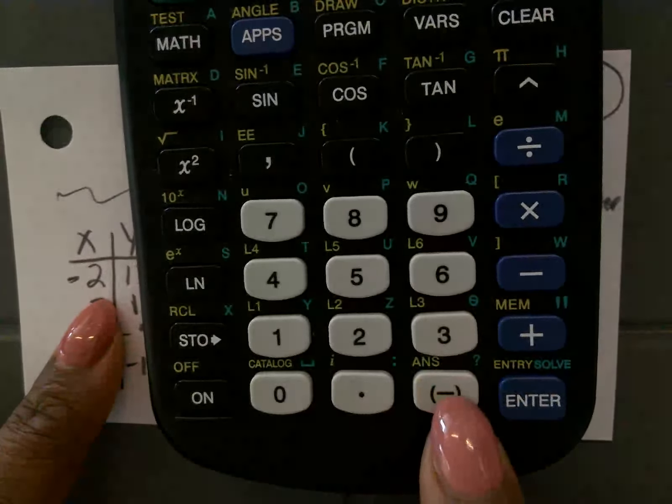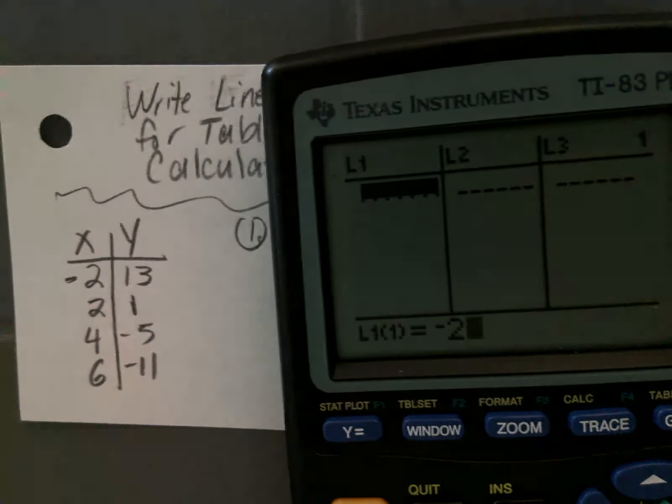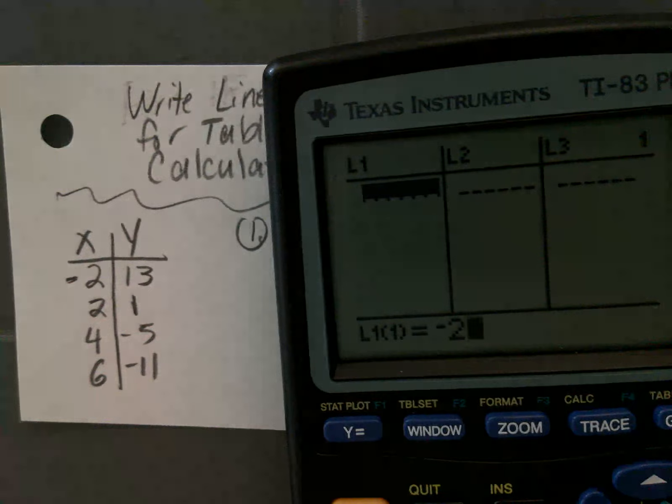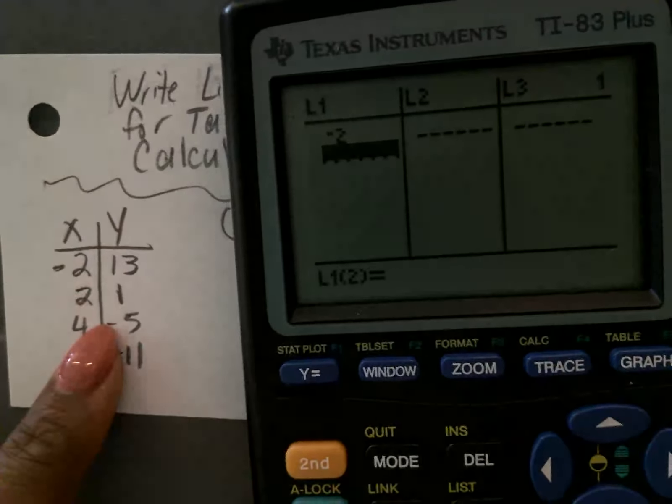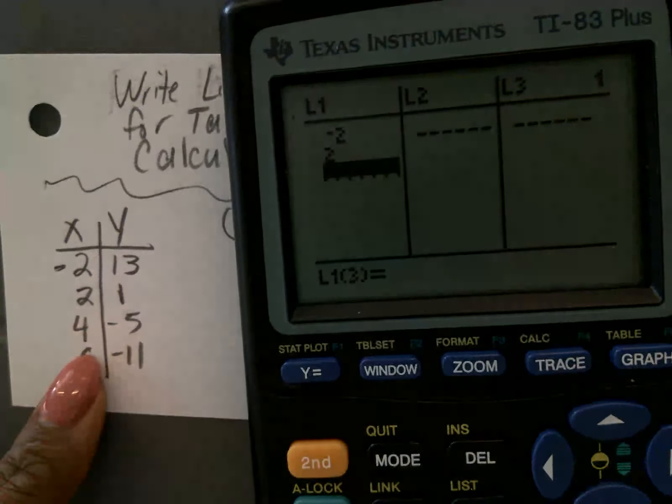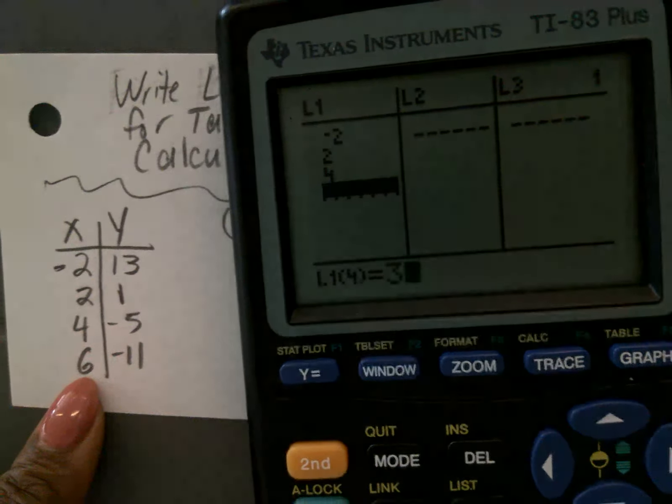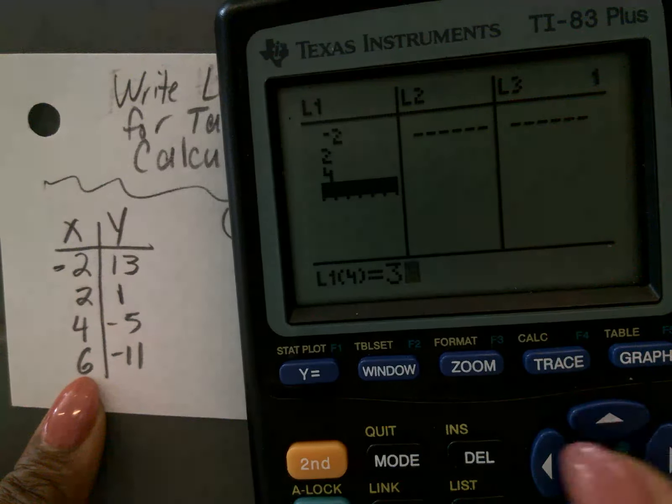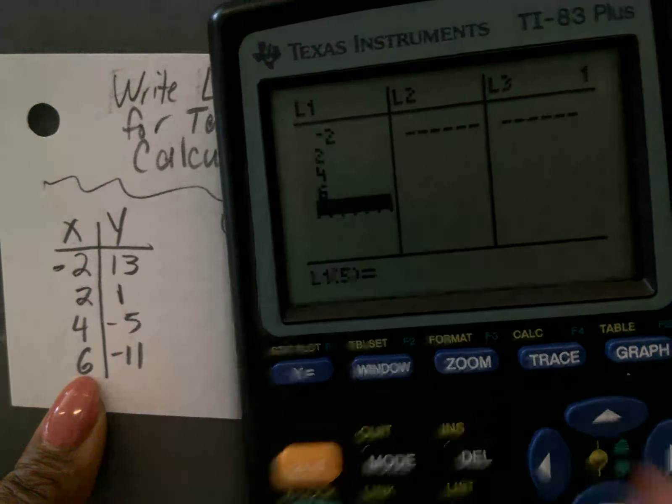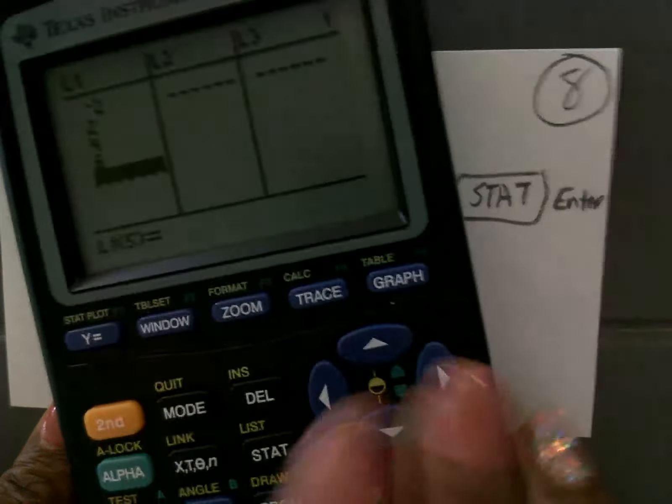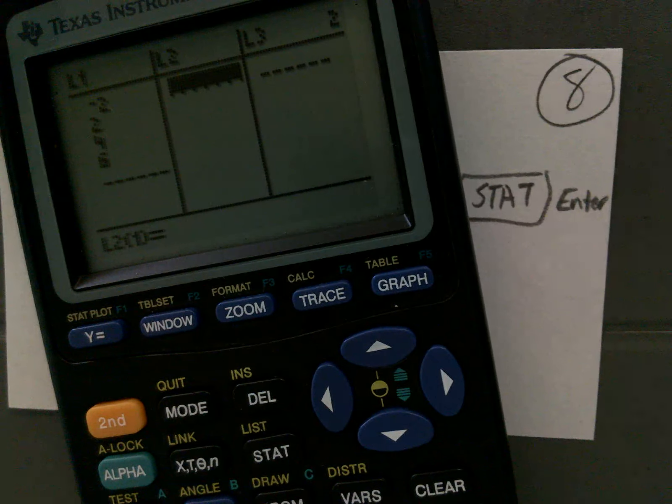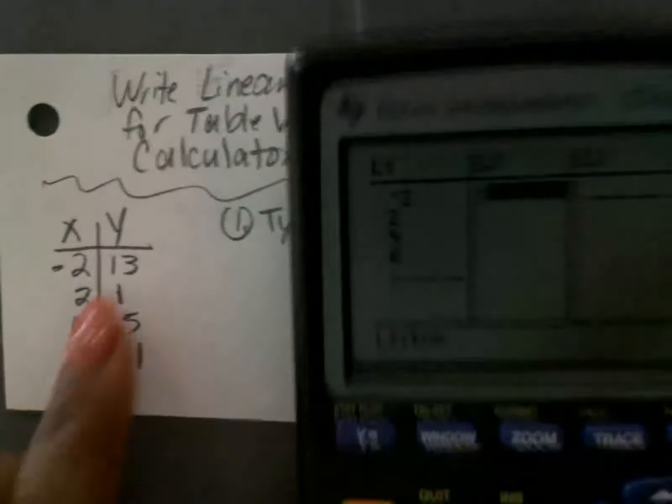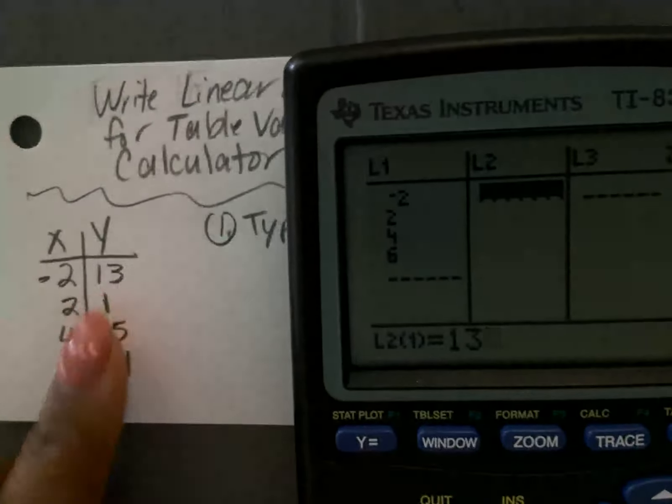All right, now this is where you type the numbers in. So let's do that now. Don't forget, for a negative, you're going to use the negative sign. Pause for the pause. So you can press enter, or you can press the down arrow to go to the next line. So I'm going to type in my X values first.